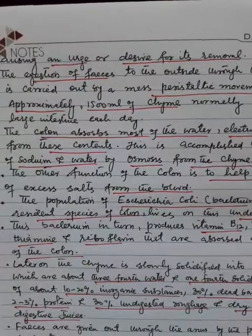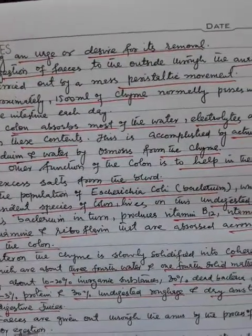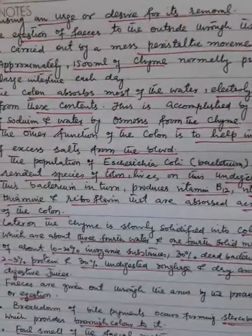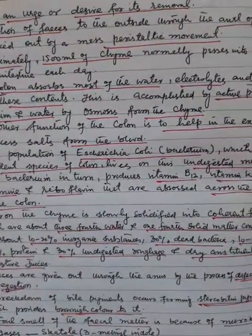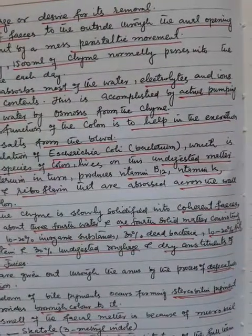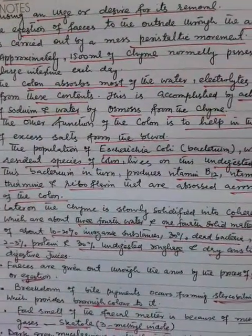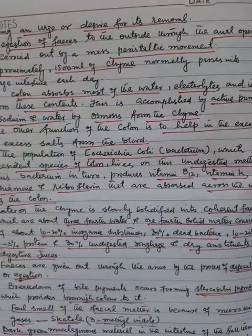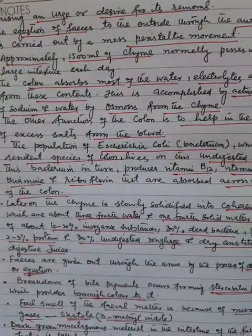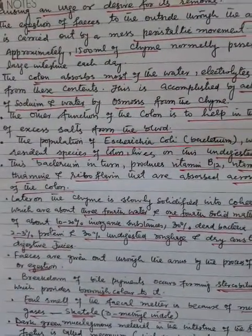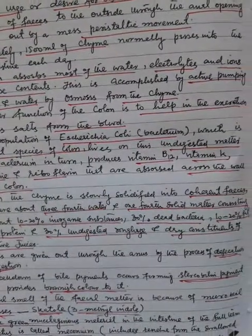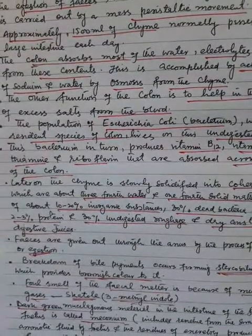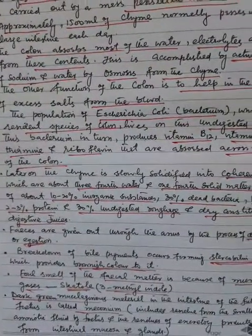Approximately 1500 ml of chyme normally passes into the large intestine each day. The colon absorbs most of the water, electrolytes, and ions from these contents. This is accomplished by active pumping of sodium and absorption of water by osmosis from the chyme. Another function of the colon is to help in the excretion of excess salts from the blood.